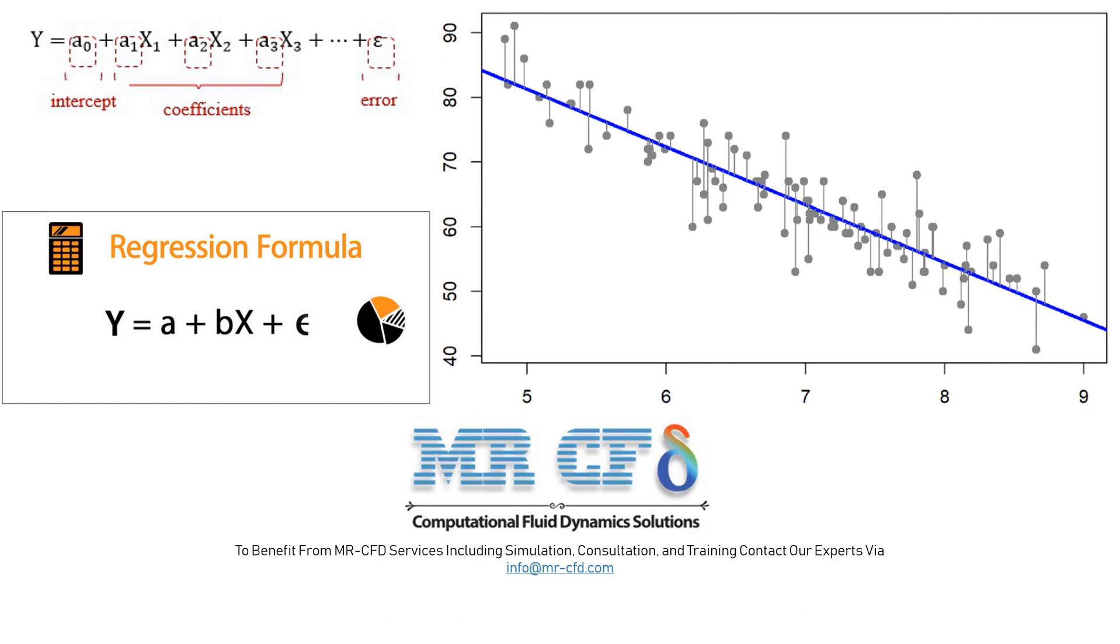These coefficients must have values that when we put the value of each of the input parameters in the resulting equation, the value of the output parameter of the equation has the least difference with the value of the output parameter obtained during the solution process at the same value of the input parameters.